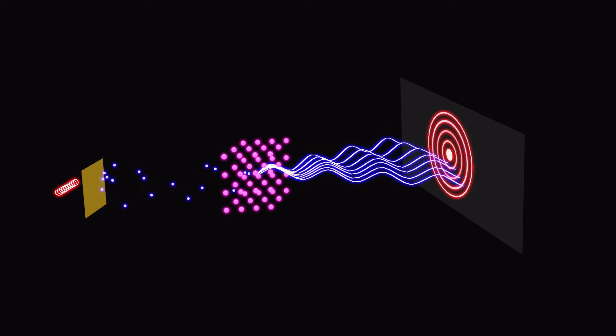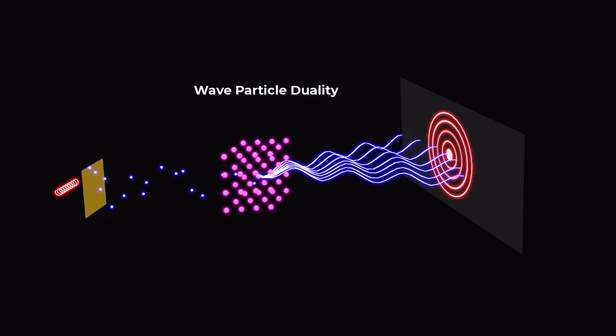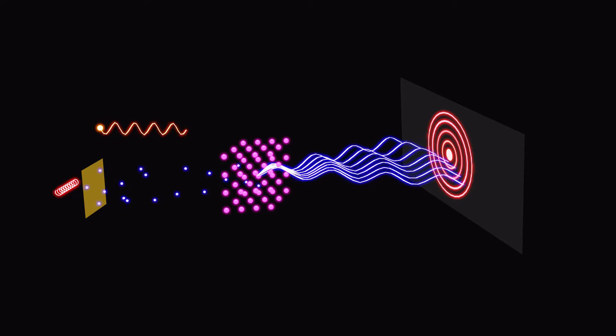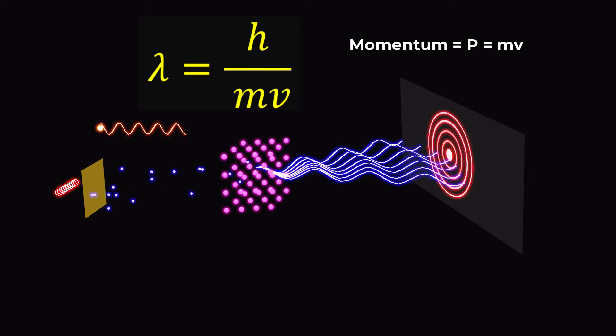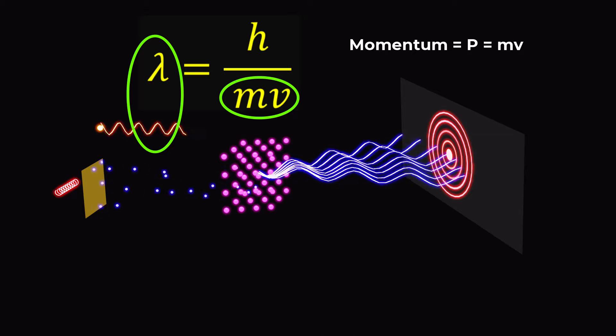All particles exhibit wave-like properties, which is known as wave-particle duality. De Broglie derived a relationship between the wavelength and momentum of material particles, which is known as the de Broglie wavelength.